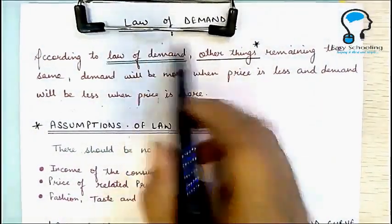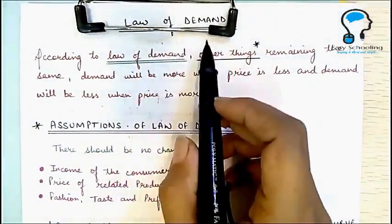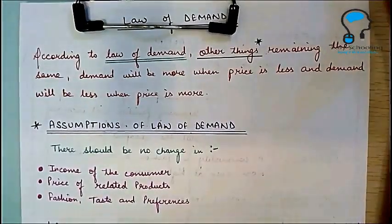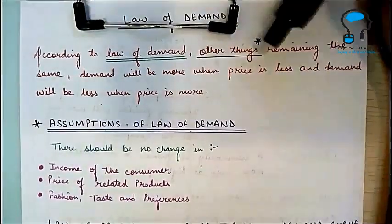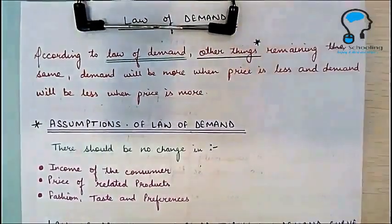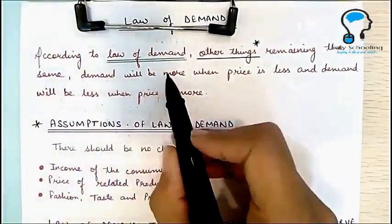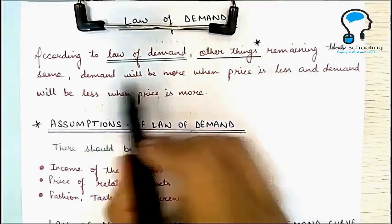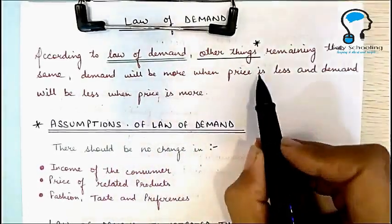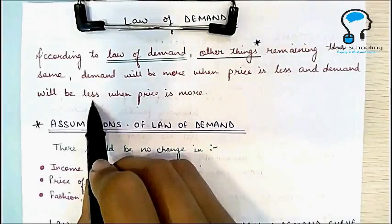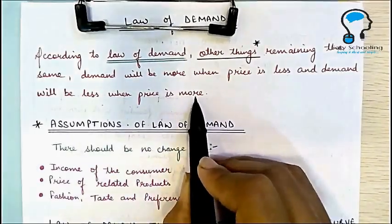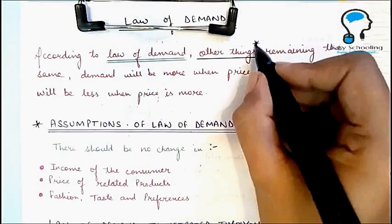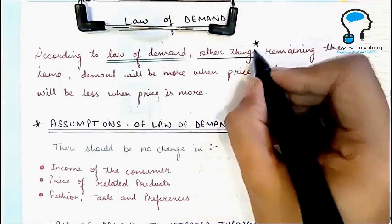Our next topic is the Law of Demand. We already know what demand is and what factors affect the demand of a commodity. According to the Law of Demand, other things remaining the same, demand will be more when price is less, and demand will be less when price is more — it has an inverse relationship.